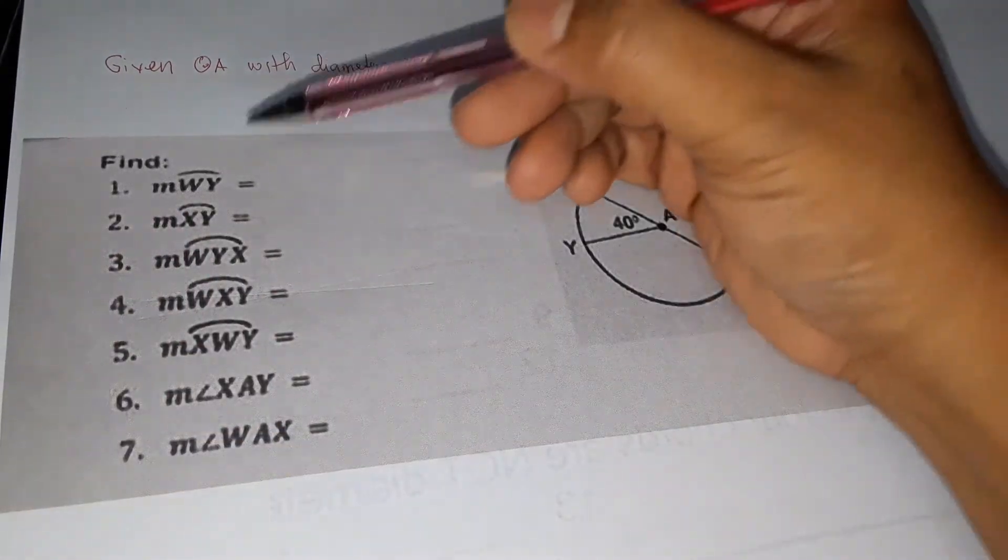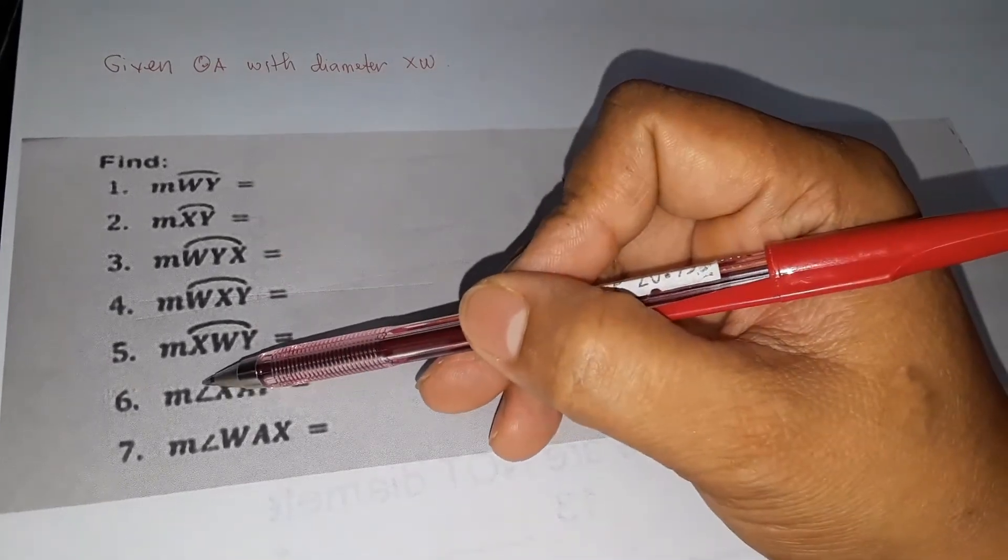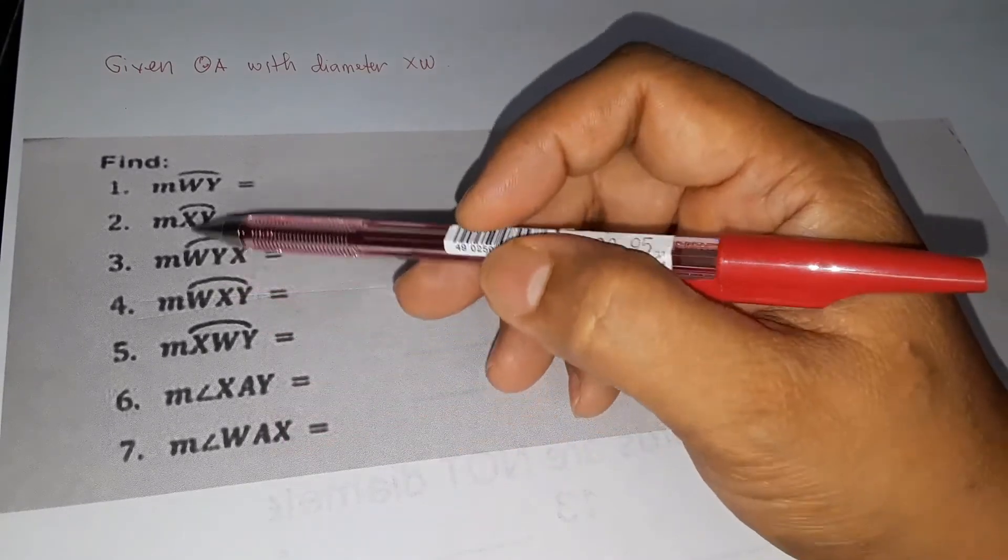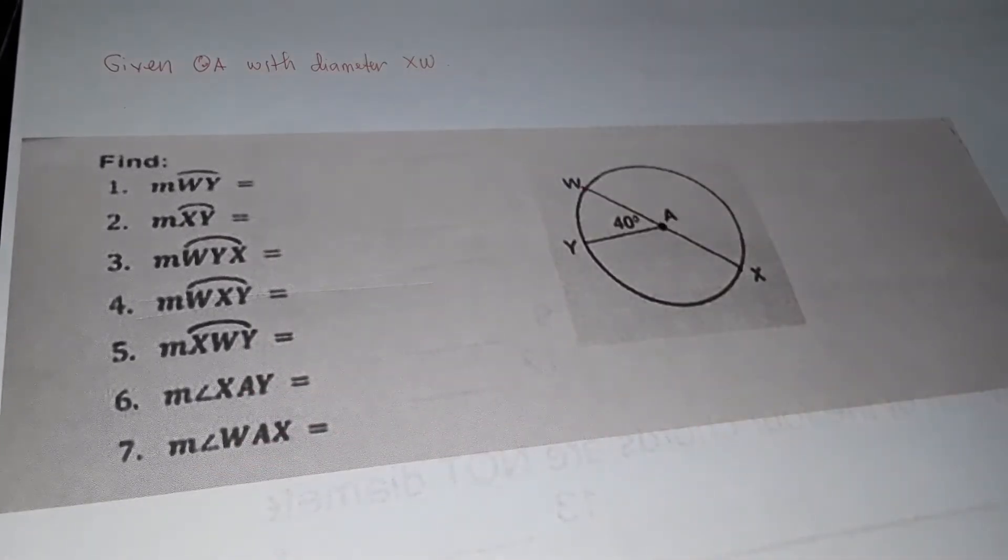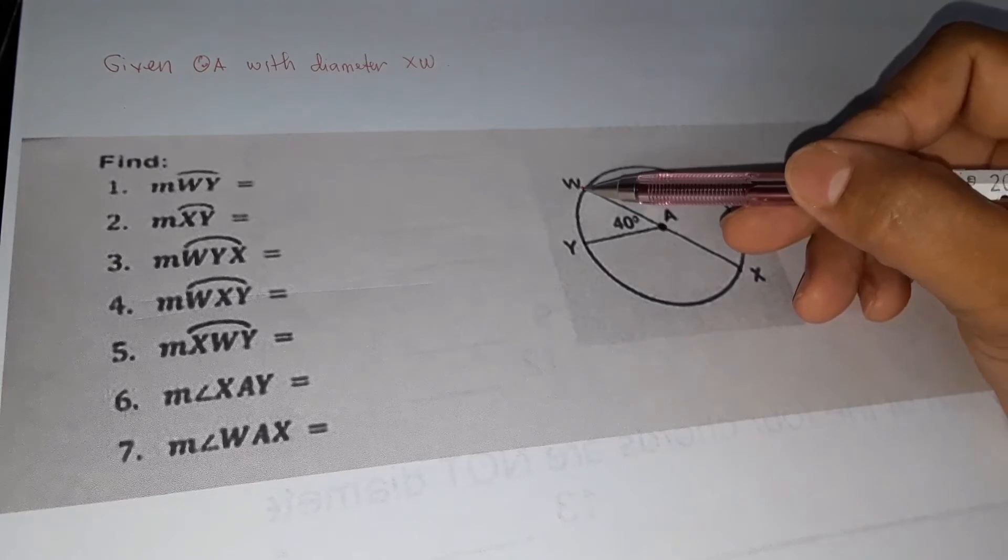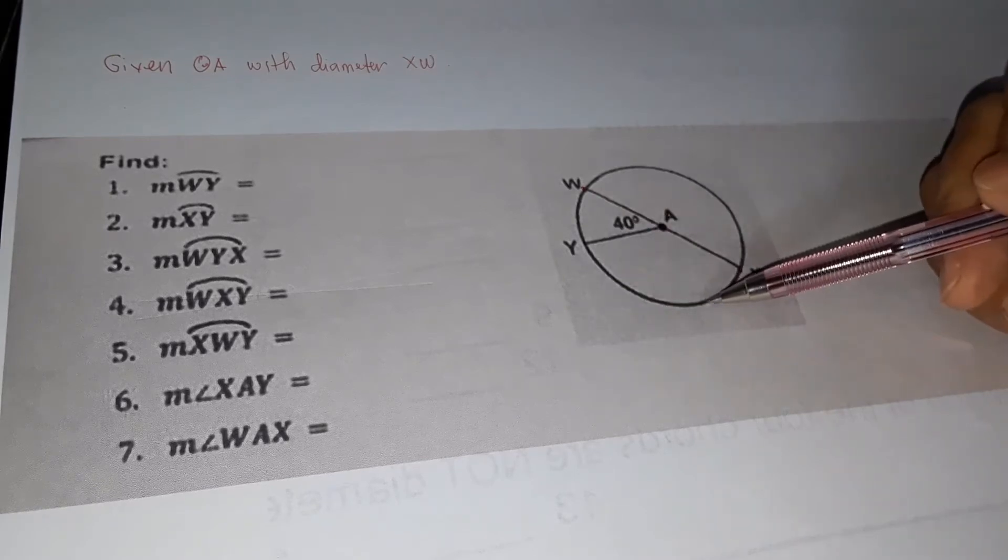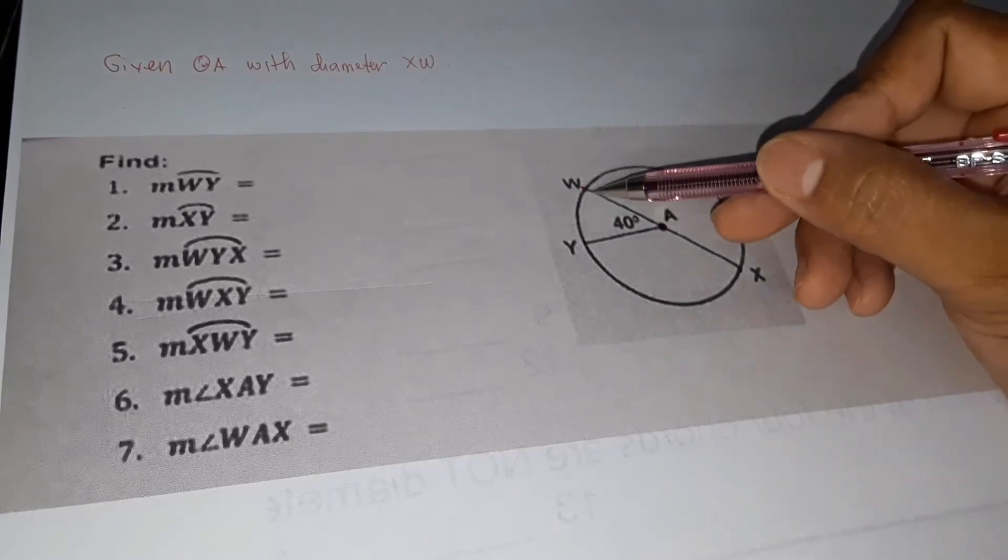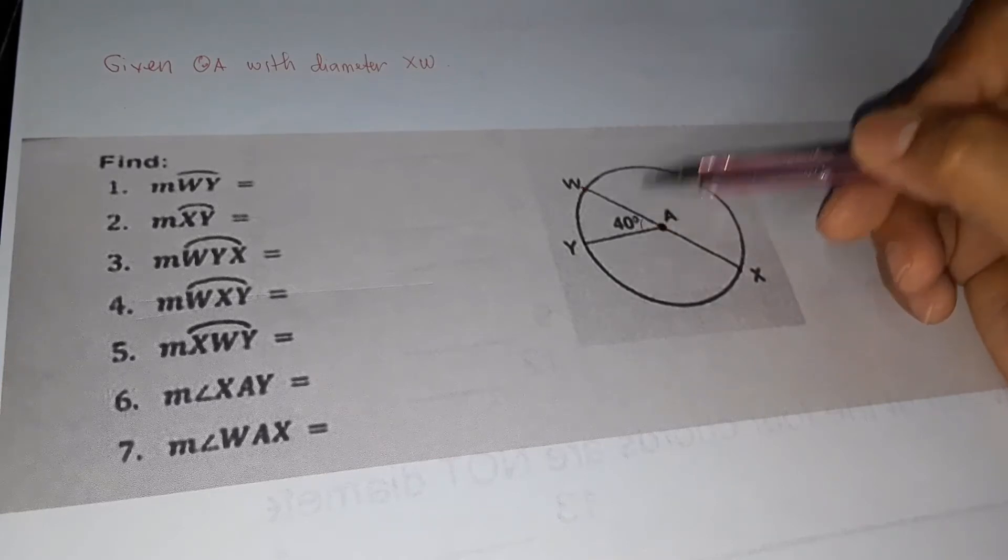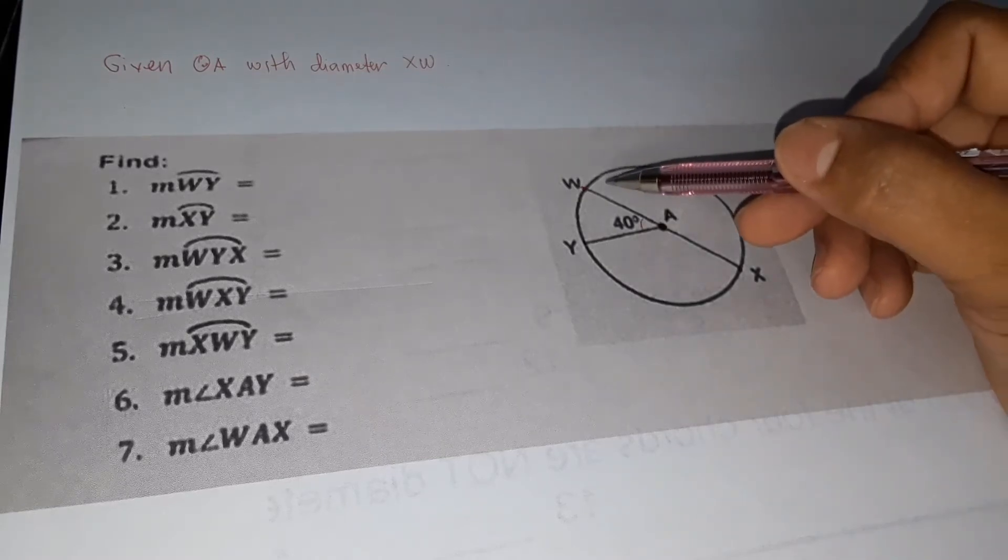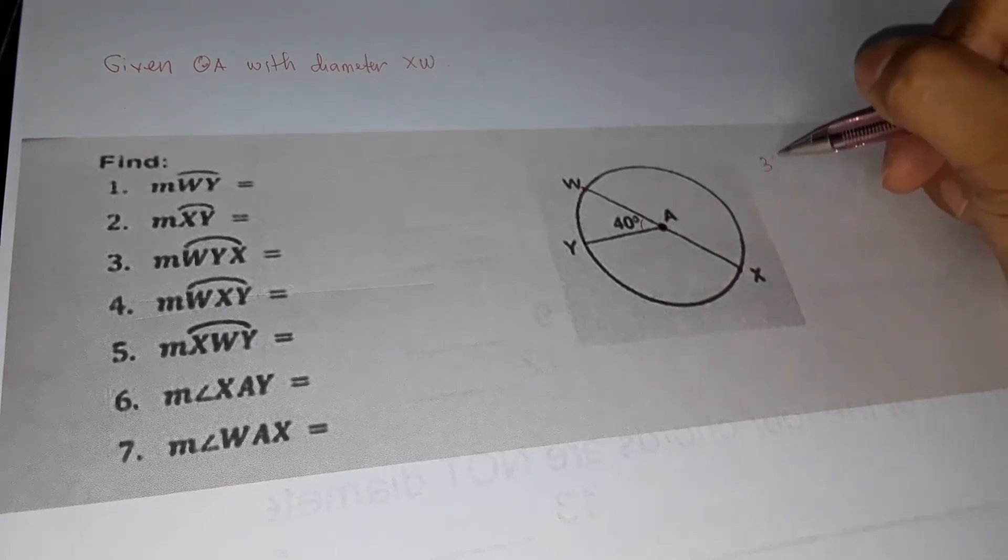We have some unknowns to find. This symbol is called arc, and this symbol is called angle. The m means measurement. When we say arc, we're referring to these parts. These are the arcs. And the angles are these. For example, this angle measures 40 degrees.